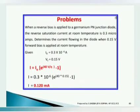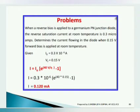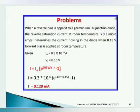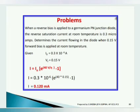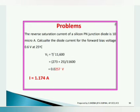Moving to a problem based on current flow: when a reverse bias is applied to a PN junction diode of germanium type, the reverse saturation current at room temperature is 0.3 microamps. Determine the current flowing in the diode when 0.15 volt forward bias is applied at room temperature. Substituting I0 and using I = I0·(e^(V/ηVT) − 1), where at room temperature the value is 40V, and simplifying, the result is I equal to 0.120 milliamps.